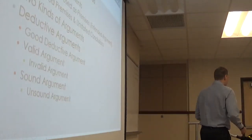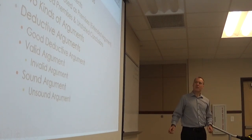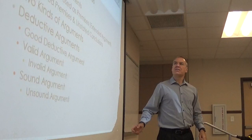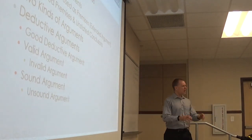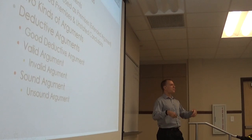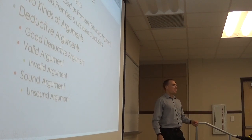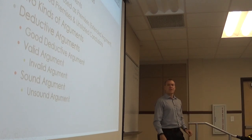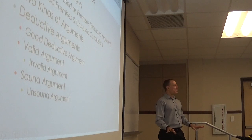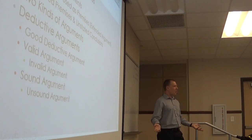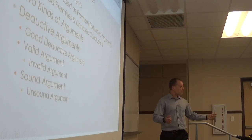Going back to Part 1, we saw that in philosophy, arguments are not fights or battles or disputes — they are attempts to prove a claim. An argument consists of a conclusion, which answers the question 'what's the point?' — meaning what is the author trying to prove or establish — and premises, which answer the question 'what are the reasons or evidence being offered for that point?' If there's a point being made and some reasons or evidence offered, you have an argument. It could be a terrible argument, a fallacy, or a good one.